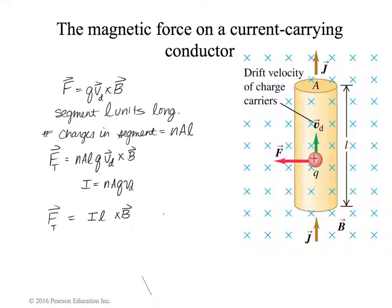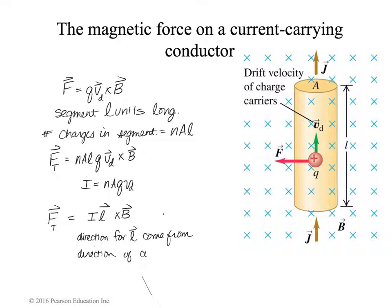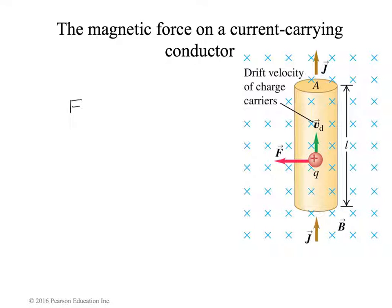We've already decided — and it's not just an arbitrary decision, it makes total sense — that current isn't really a vector. Current is just a quantity. So we're going to assign the vector nature to the length of the portion of current-carrying wire that we're looking at. The direction for L will come from the direction of the current flow. And so we get the force on a current-carrying wire: F equals I L cross B.